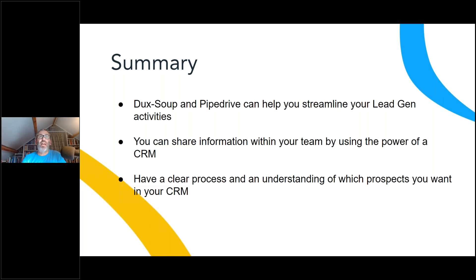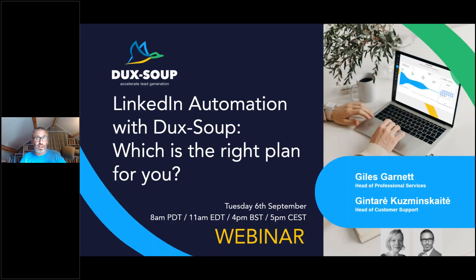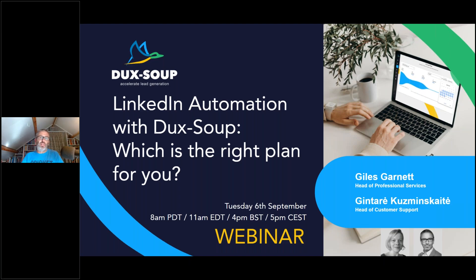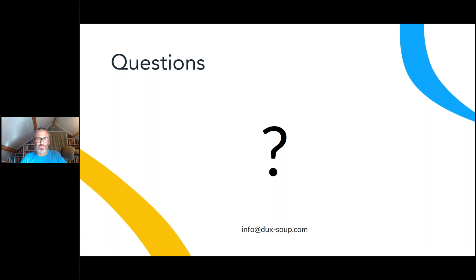I'm just conscious of time. In two weeks' time — on the 6th of September — we'll be covering 'LinkedIn Automation with DuckSoup: Which Is the Right Plan for You?' — looking at the Starter, Pro, and Turbo editions, going through the functionality and benefits of each so people can get a clear understanding of what's most appropriate for them. I think it's now time to move on to questions. Gin, do we have any?